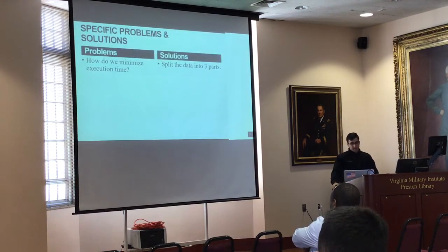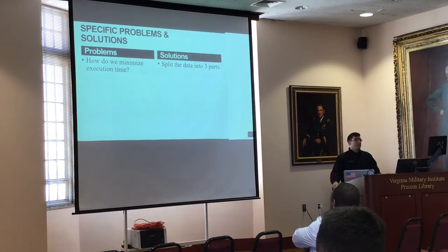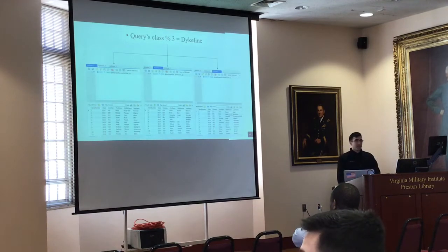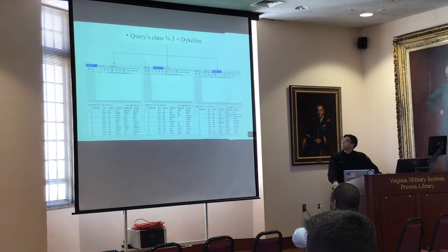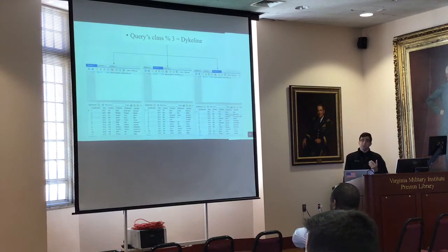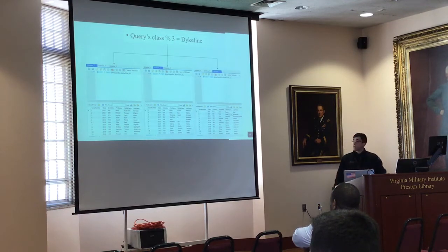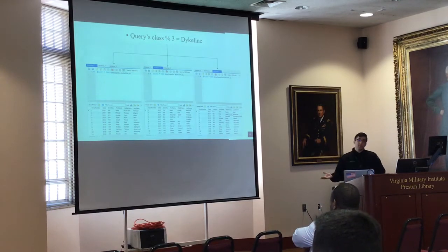Another specific problem: how do we minimize execution time? Instead of retrieving from one large database, we split the data into three parts — the three tables I talked about before. When a person enters their query, we get their class year, divide by 3, take the remainder (modulate it in computer science terms), and that determines which dike line table to search. So 2016 mod 3 gives 0, 2017 mod 3 gives 1, etc. This splits the data into thirds, which cuts down significantly on execution time.